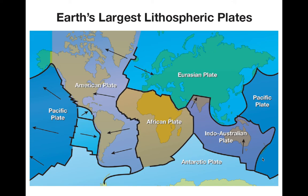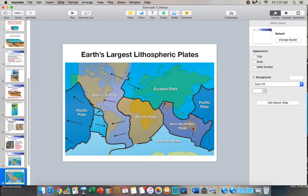All of these tectonic plates are not just doing the same things — some are crashing together, some are moving away from each other, and some are sliding past each other. It's important to remember the features found on Earth because of that: at convergent boundaries we can get mountains and trenches; at divergent boundaries we can get mid-ocean ridges. Those are the key things to remember.